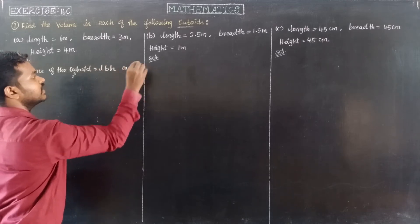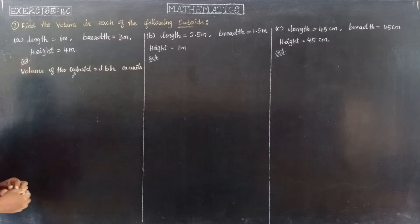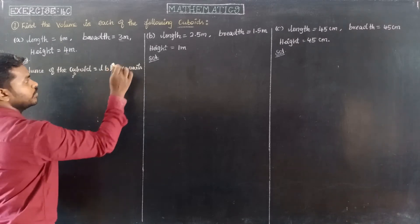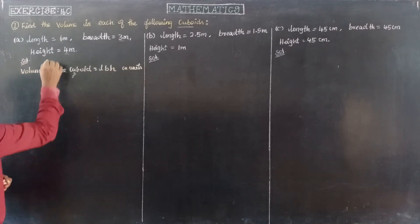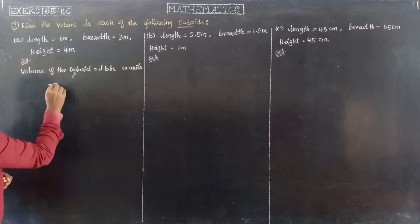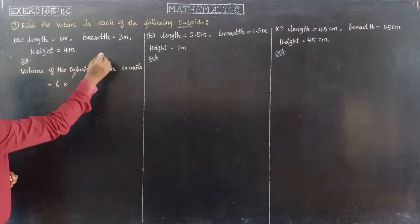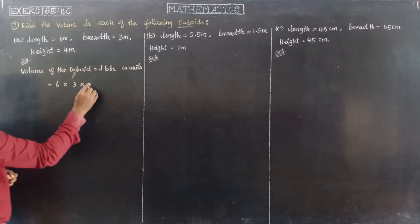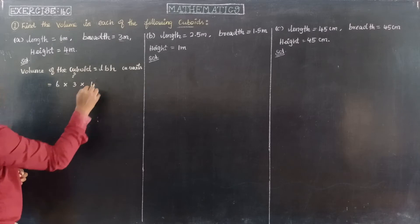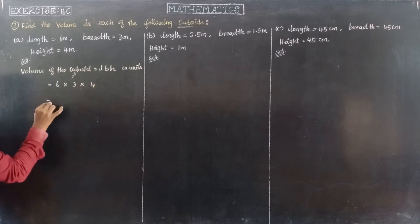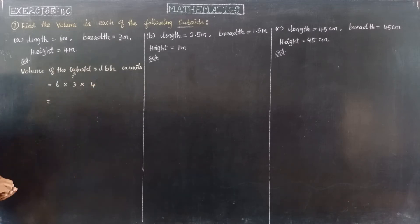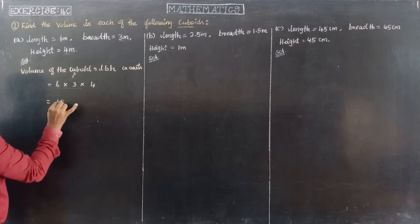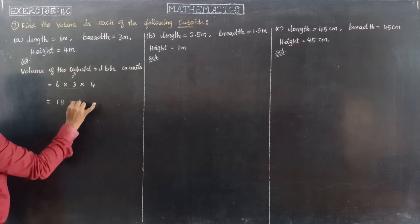So, length into breadth into height, in cubic units. Here, length of the cuboid is 6 meter, into breadth of the cuboid 3 meter, into height of the cuboid 4 meter. So, 6 into 3 into 4. 6 times 3 is 18, into 4.